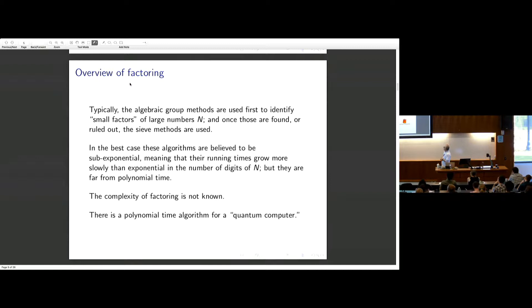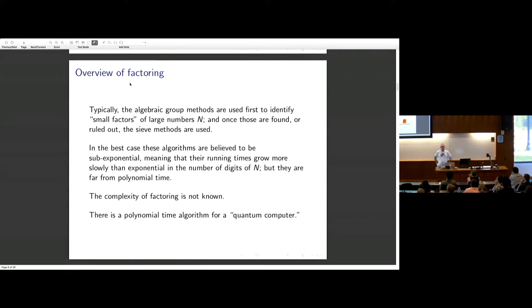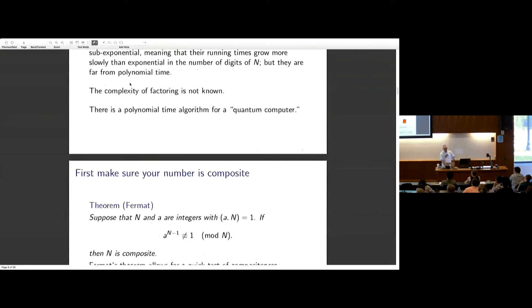Typically you use an algebraic group method to find the small factors, then when you're ready, you use a sieve method. These algorithms are what's called sub-exponential time. Exponential time means exponential in the number of digits, which is exponential in the logarithm of n — more or less a power of n. Those are bad. Sub-exponential means anything better than that. The elliptic curve method is better than exponential time, but far from polynomial time, which is kind of the dream. The true complexity of factoring isn't known, and even the theorems in this field depend on a lot of unproven conjectures in analytic number theory. There is a quantum algorithm which is polynomial time, about which I know nothing.